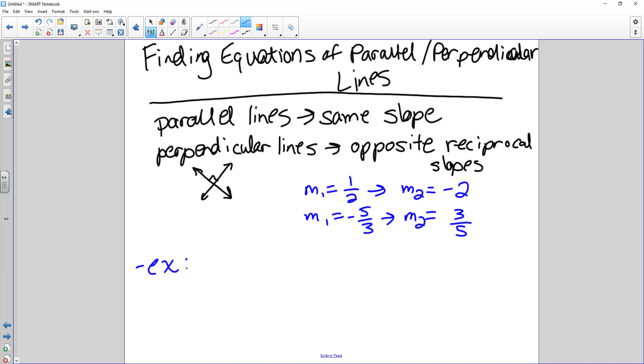So let's first say that we want to find the equation of a line. Find an equation of a line parallel to 3x plus y equals 5 and through negative one, two.